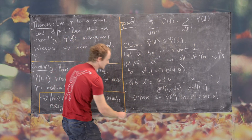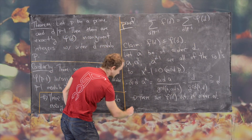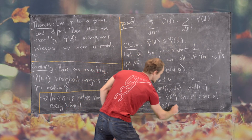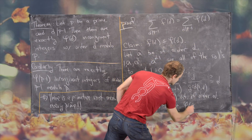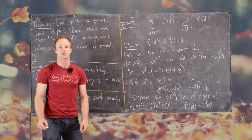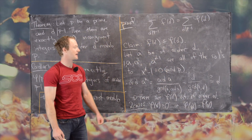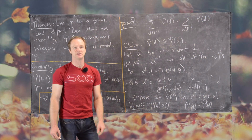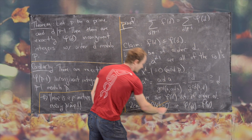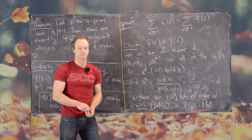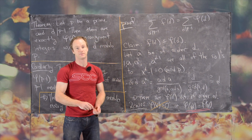So we have two cases: F(D) = 0 or F(D) = φ(D). The case F(D) = 0 is impossible, because if φ(D) were zero the sum identity would fail. So we are left with F(D) = φ(D) as the only possibility, which finishes the proof.